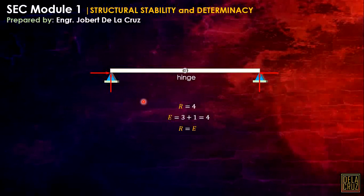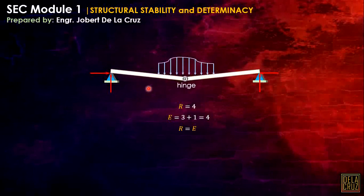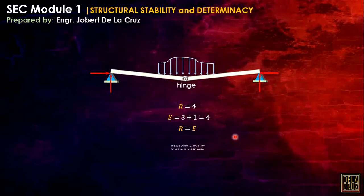However, we must observe the geometrical form of the beam. If we apply a lateral load, with the internal hinge in the middle, the beam will simply rotate at that point and also at the pin supports, causing the beam to move. We cannot always rely solely on the equations. In this case, it is clear that the beam is unstable — we should imagine the mechanism of the beam.